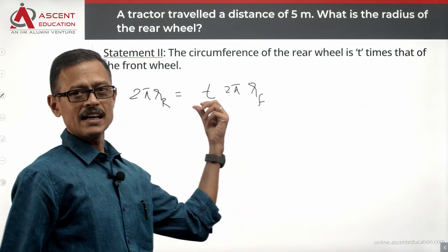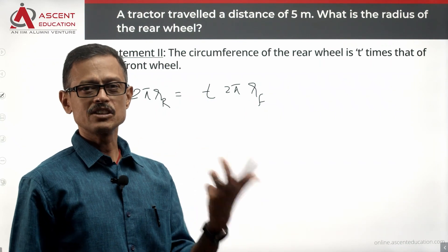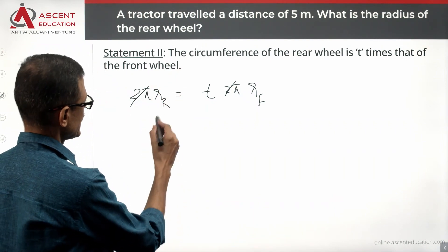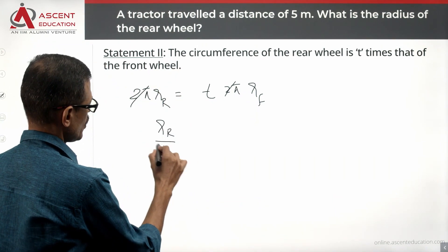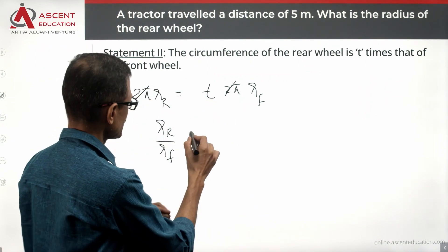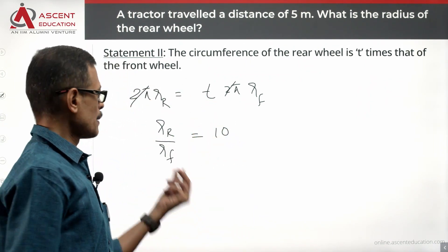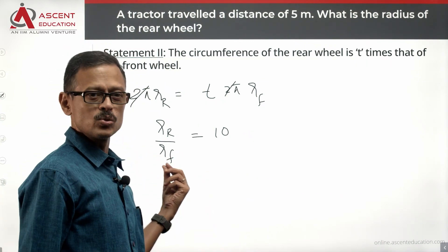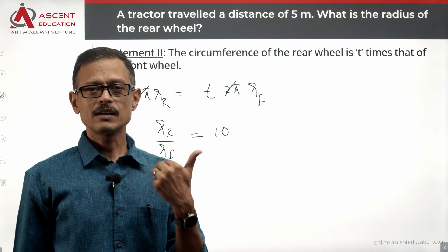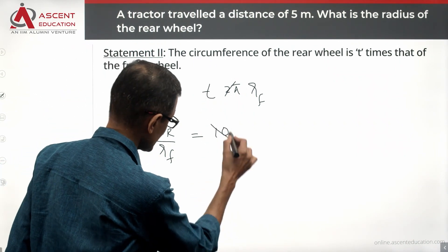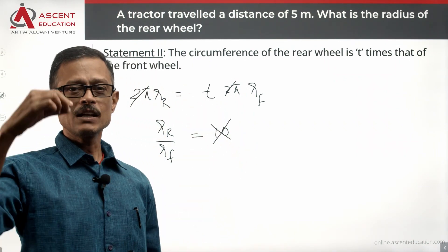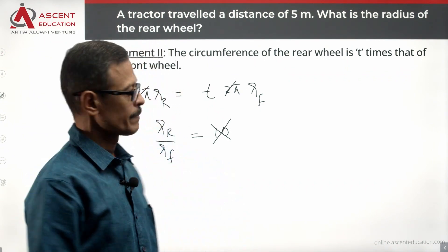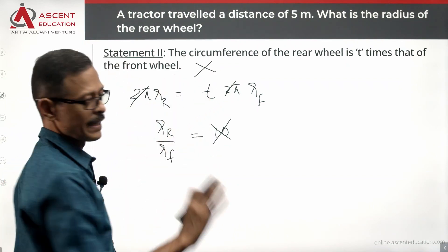So t gives us the ratio rr divided by rf equals t. But if we don't know the individual radius values — only their ratio — we are not able to find an answer for the radius of the rear wheel. Statement 2 alone is not sufficient; eliminate it.